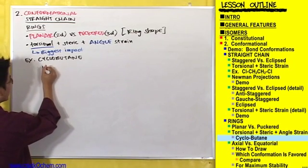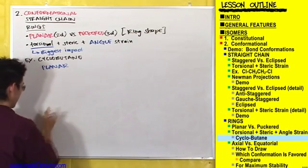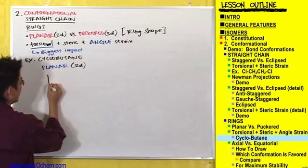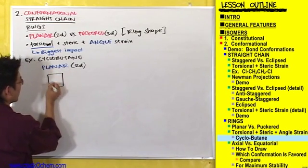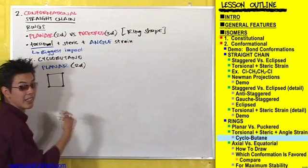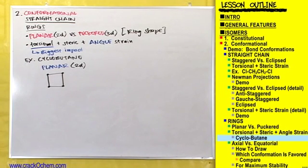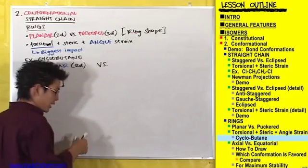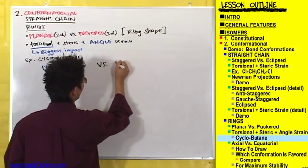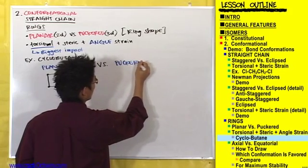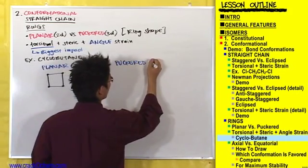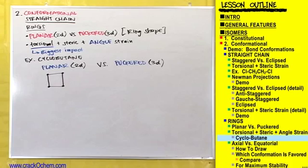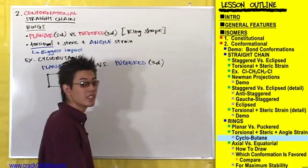So the planar 2D conformation of cyclobutane — the two-dimensional conformation — looks like this, with a carbon here, here, here, and here. And let's compare this to its puckered 3D conformation. The 3D conformation is going to look like this.